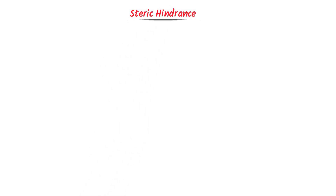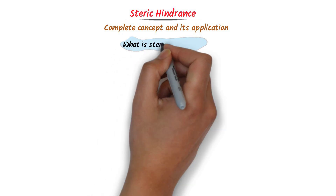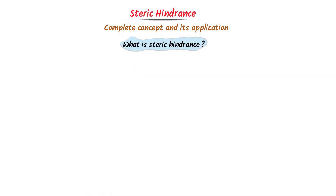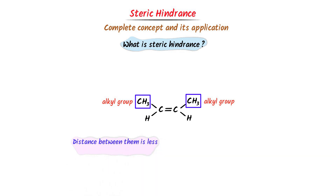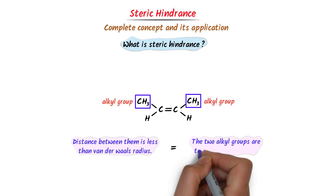Steric hindrance. I will teach you the complete concept of steric hindrance and its application. Firstly, let me teach you what is steric hindrance. Consider this organic compound. We can see that this is alkyl group CH3 and this is also alkyl group CH3. The distance between these two alkyl groups is less than the van der Waals radius, which means that they are too close to each other.